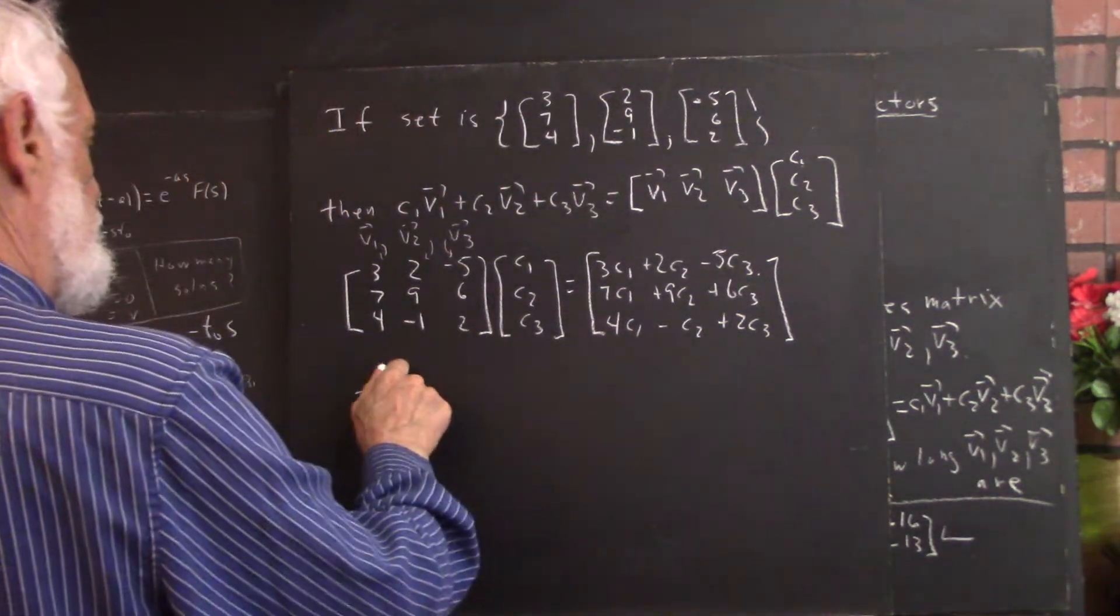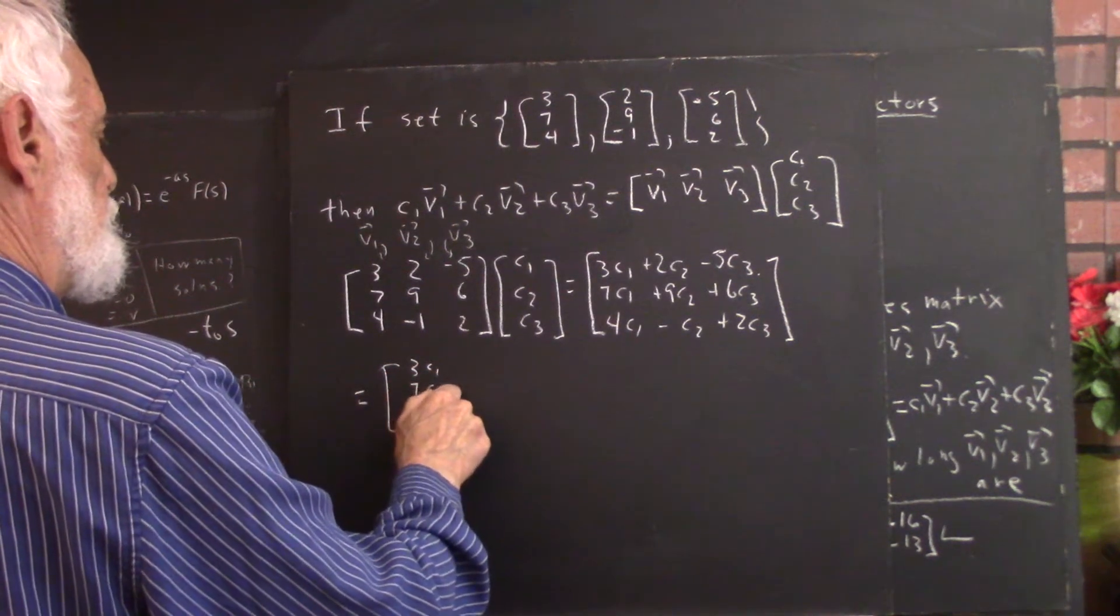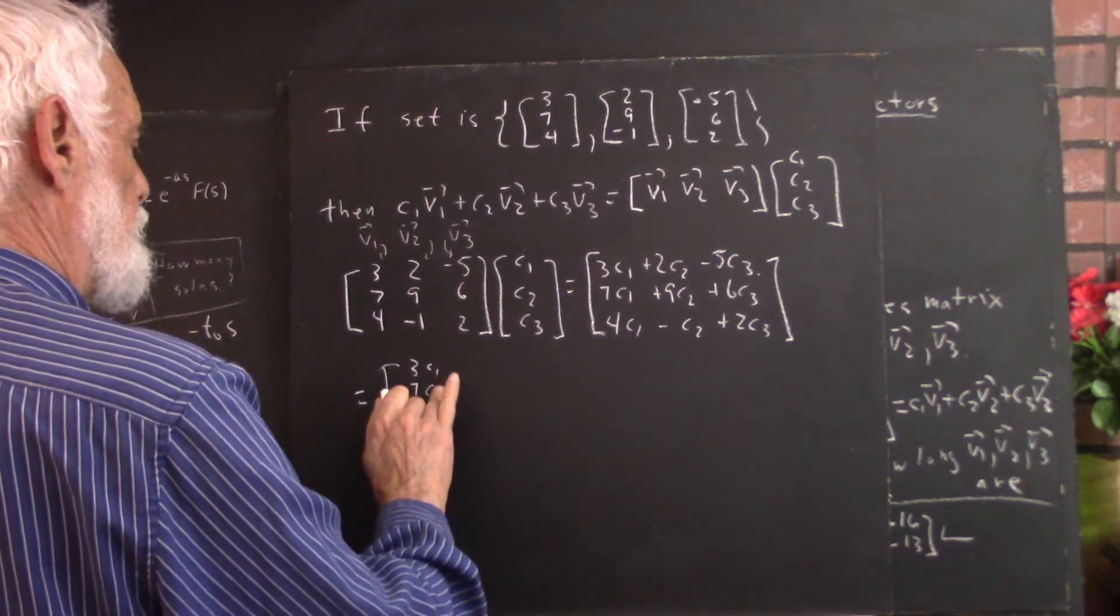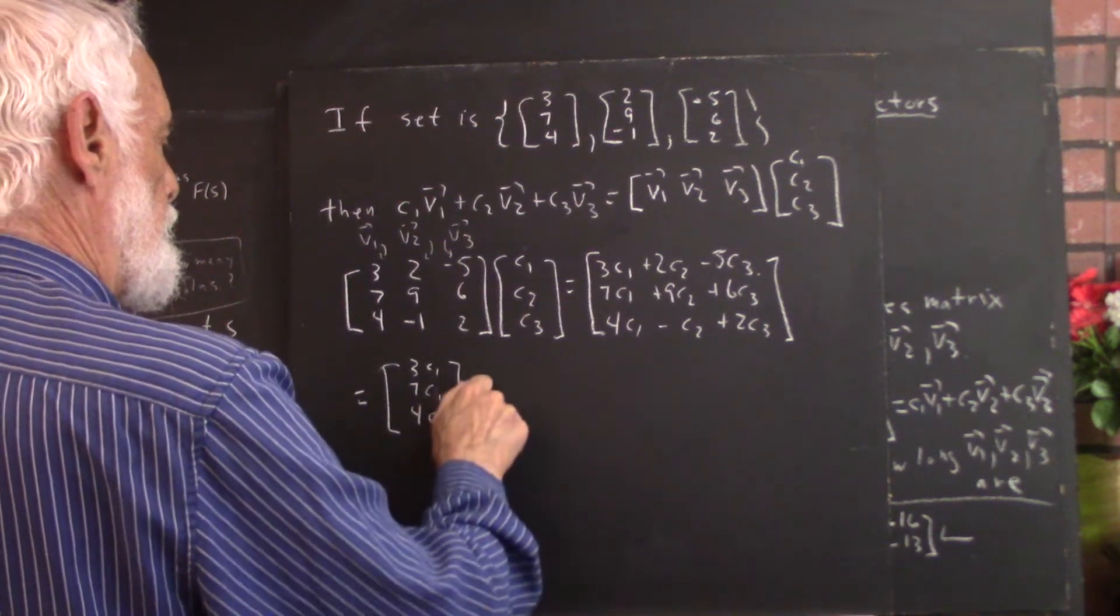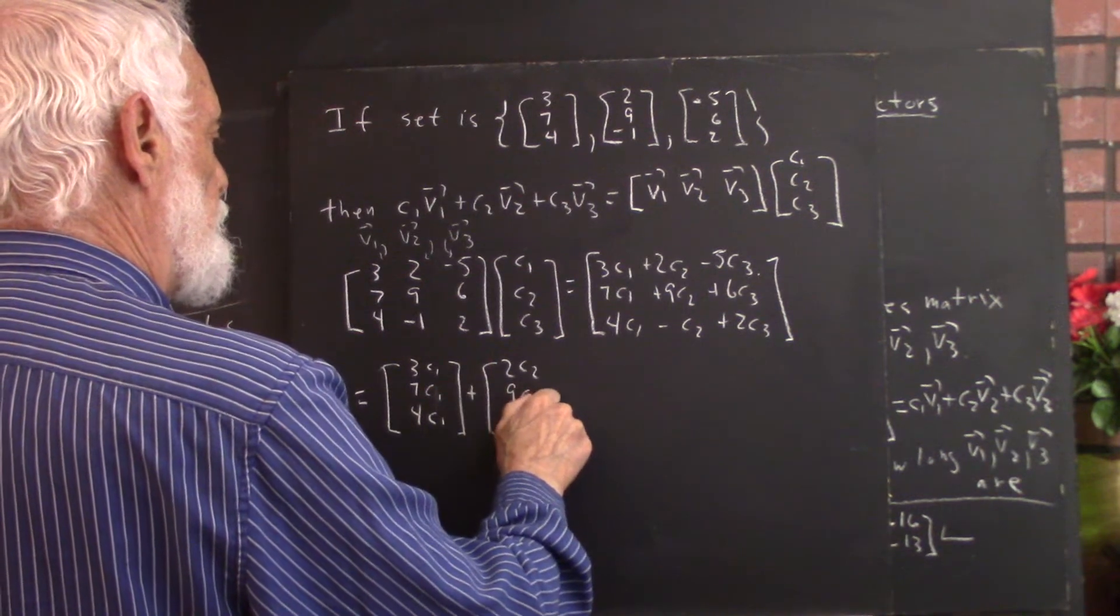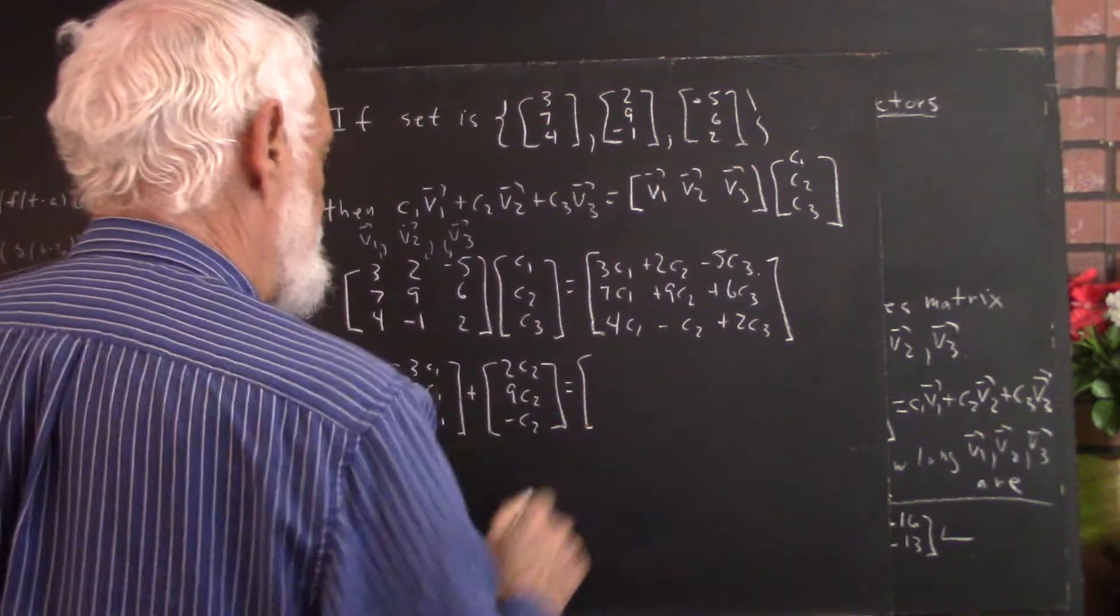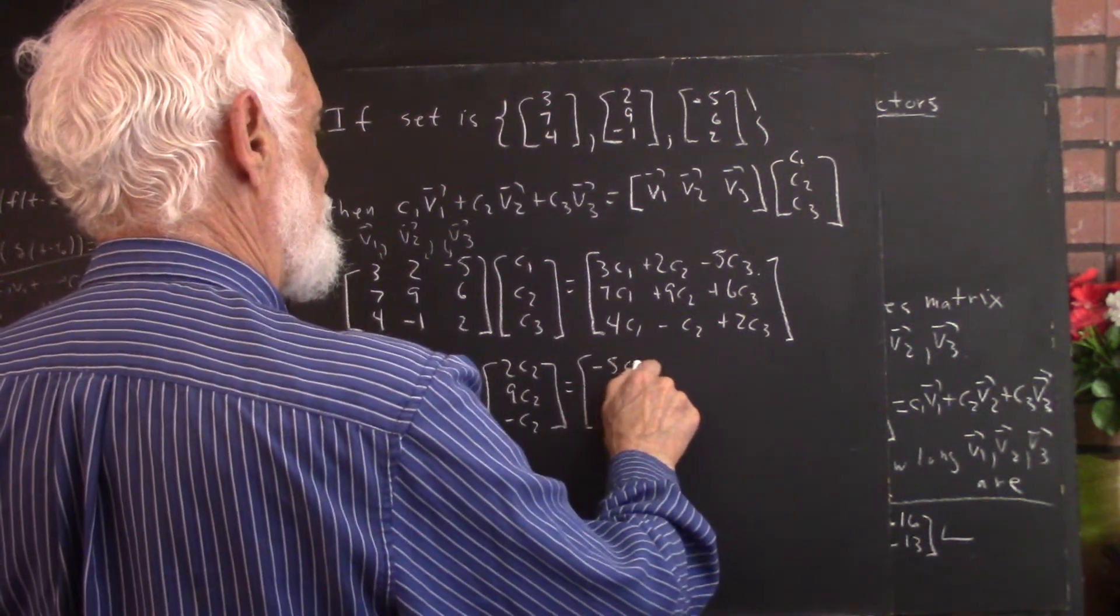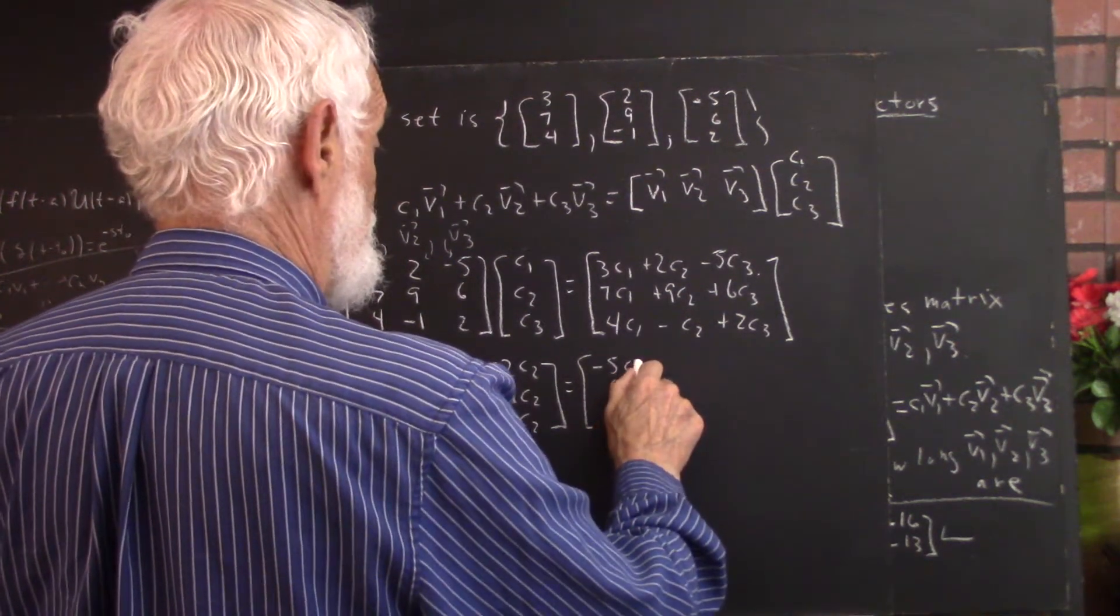The sum could be written as 3c1, 7c1, 4c1, and that's 7c1, not 7c2. Plus, 2c2, 9c2, negative c2, and then negative 5c3, 6c3, 2c3, that's c3, not c2.